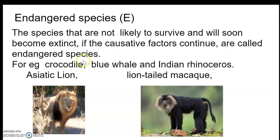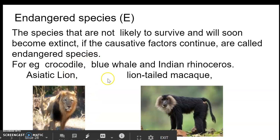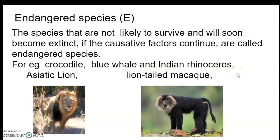Examples of endangered species include Asiatic lion, lion-tailed macaque, crocodile, blue whale, and Indian rhinoceros — all of these fall under the category of endangered species. The population of endangered species needs to be conserved urgently. Otherwise they will soon become extinct.